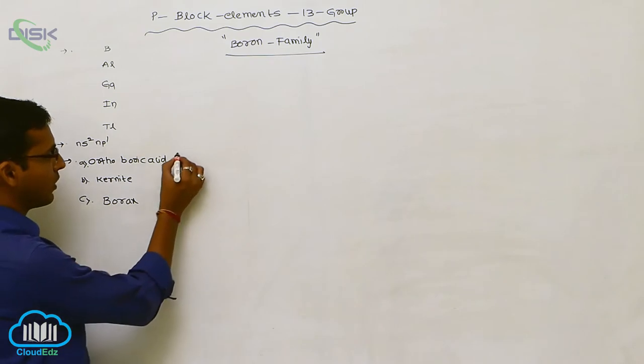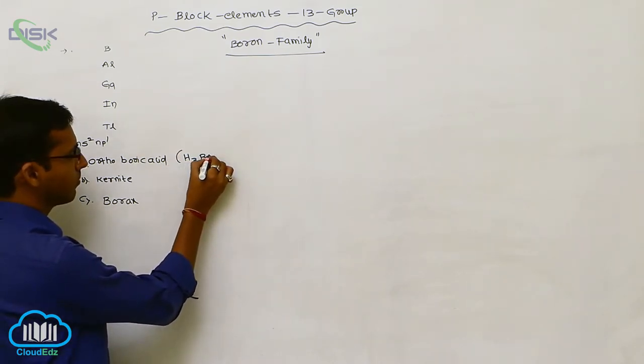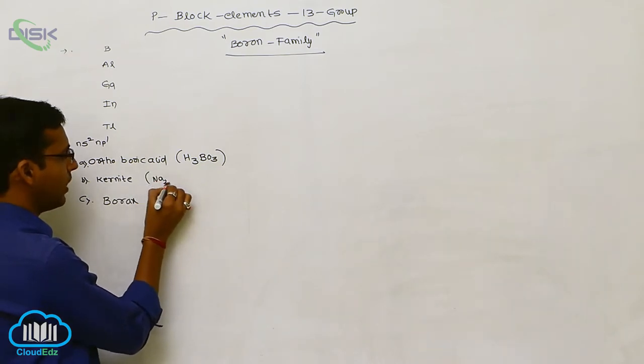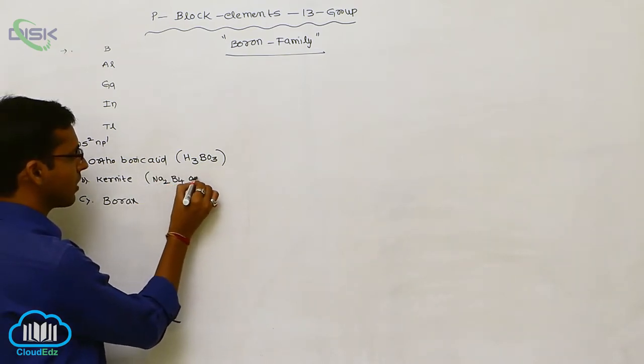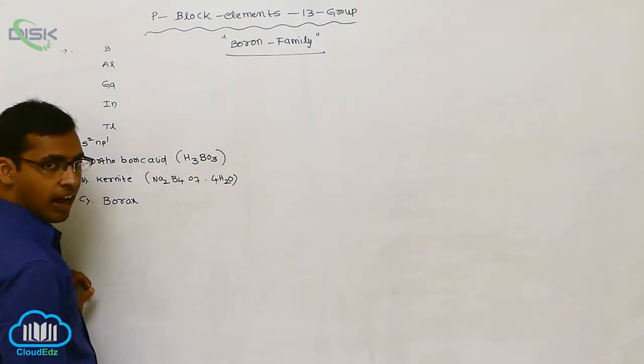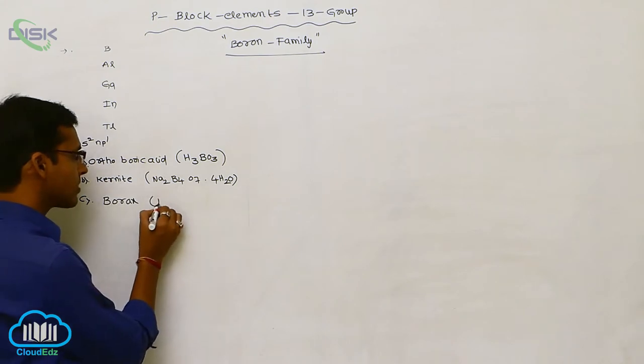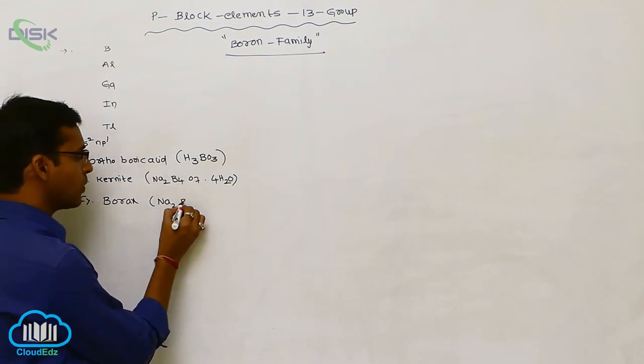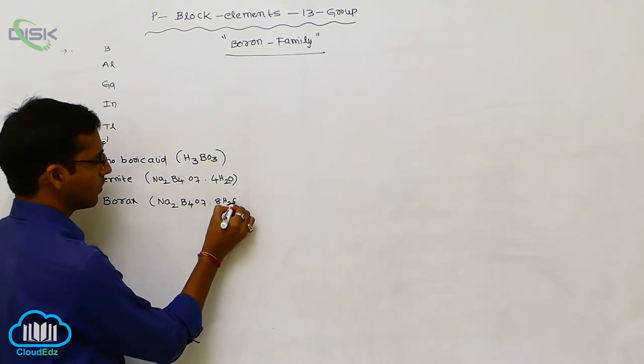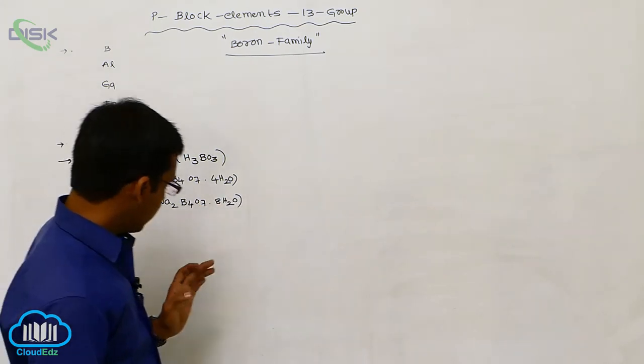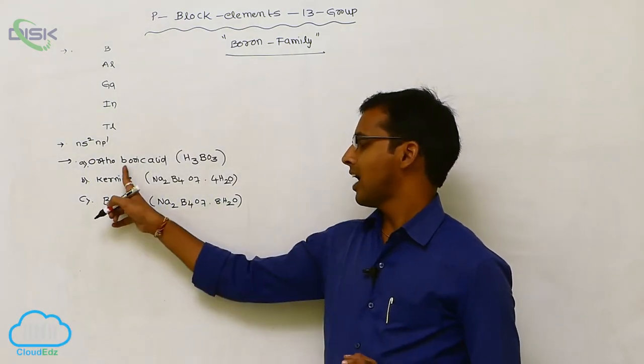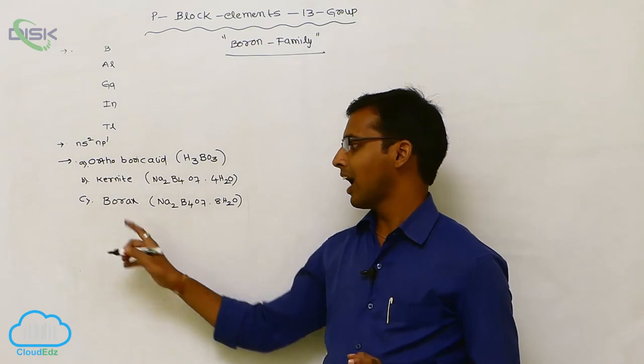The formula for orthoboric acid is H3BO3. Kernite has the formula Na2B4O7·4H2O tetrahydrate. Borax has the formula Na2B4O7·10H2O. These are the available forms of boron.